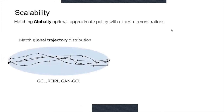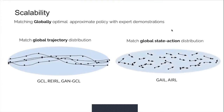For example, guided cost learning, relative entropy IRL, and GAN-GCL match the global trajectory distribution. GAIL and AIRL match the global state or state-action distribution. This is impractical, particularly for high-dimensional continuous systems, and is the fundamental impediment to scalability because of the curse of dimensionality and the large variance of sampling in high-dimensional space.